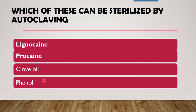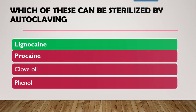Next question: which of these can be sterilized by autoclaving? Options are lignocaine, procaine, clove oil, and phenol. Lignocaine is the most stable, so it can be sterilized by autoclaving. Procaine is very unstable. Clove oil and phenol belong to the miscellaneous class of local anaesthetics.